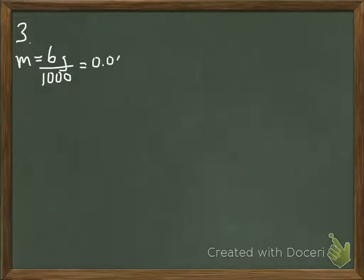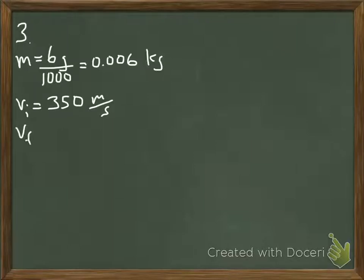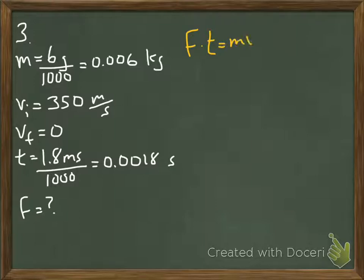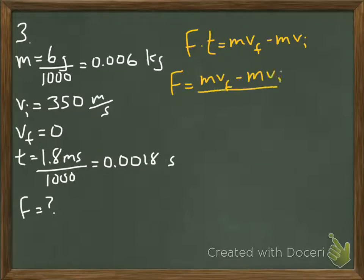This is the ballistics test question. We are given the mass — I'm going to put that in terms of kilograms. We're given the velocity. The final velocity is zero because the bullet is coming to rest. We're given the time in milliseconds, so I'm going to divide by a thousand to put that in terms of seconds. The question is asking for the force that stops the bullet. We can write out our impulse momentum theorem and rearrange, dividing both sides by T to solve for F. At this point we should have everything we need to solve for the force.